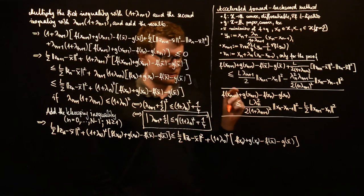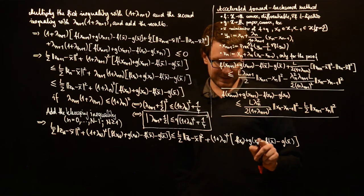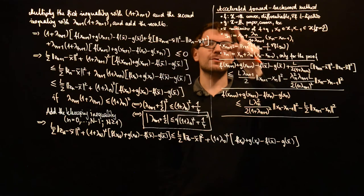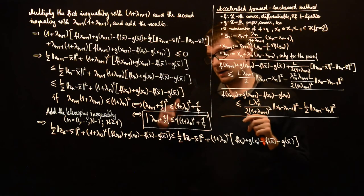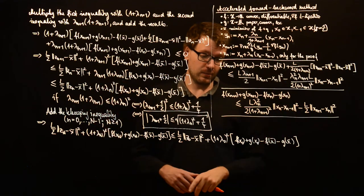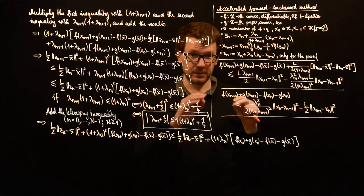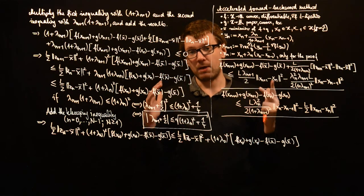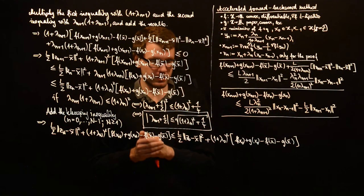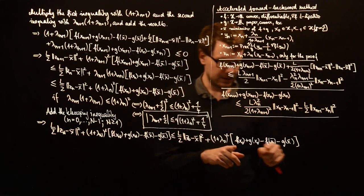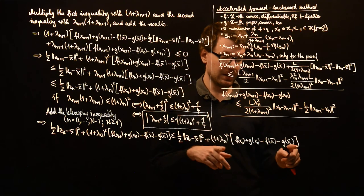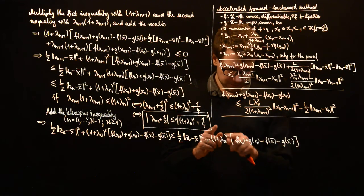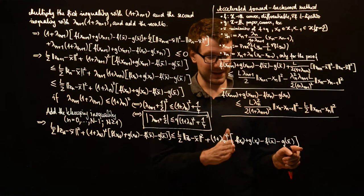There is one detail to pay attention to: g(x_0) can be plus infinity if you start at a point not in the domain of g, since g may take the value plus infinity. You can solve this by starting at a point where g has a finite value. Alternatively, you can start with λ_0 equal to −1; you just need to ensure your telescoping stops at a point where this term is finite.